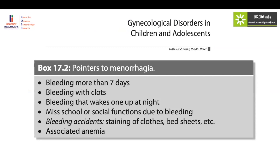What are the pointers to menorrhagia? If you don't ask the history, you will never know the period is actually heavy. If she's bleeding for more than seven days, if there are clots, if the bleeding is so much that she wakes up at night — it's very difficult to objectively identify heavy bleeding. If the girl is missing school due to heaviness of bleeding, missing school functions and tuition, having bleeding accidents, and has associated anemia, those things should be actively elicited in history, because sometimes the girl presenting with anemia will not tell you upfront that she has heavy periods.